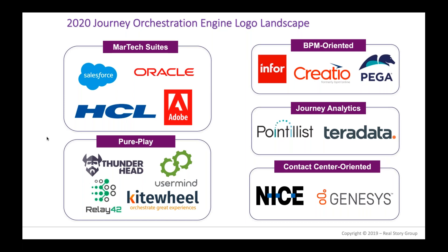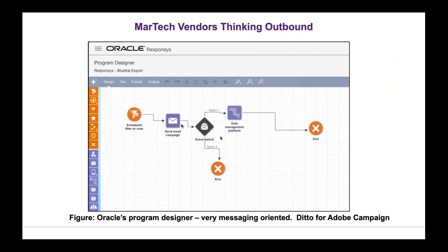Pureplay vendors are the most capable but the trade-off is you're dealing with smaller, younger companies. Thunderhead is actually OEM'd by Salesforce — when you get Interaction Studio, Salesforce's journey orchestration engine, it's actually an OEM of Thunderhead. Likewise, Kitewheel is the product behind a number of other journey orchestration services, including Acquia's journey orchestration engine. For Oracle, whether using Oracle Responsys or Eloqua, the journeys are really built around messaging and not necessarily inbound, contact center, or customer support journeys.